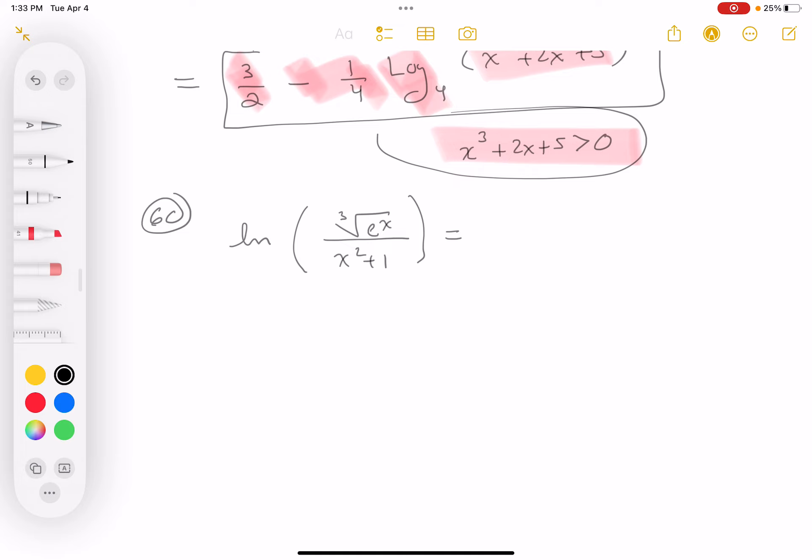So I'm going to split it. It's going to be natural log of the cube root of e to the x minus the natural log of x squared plus 1.